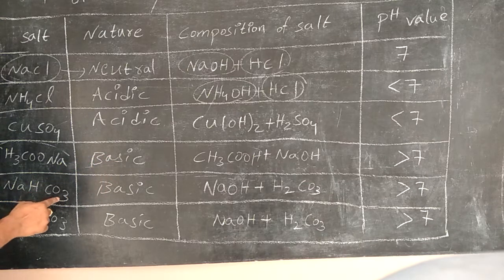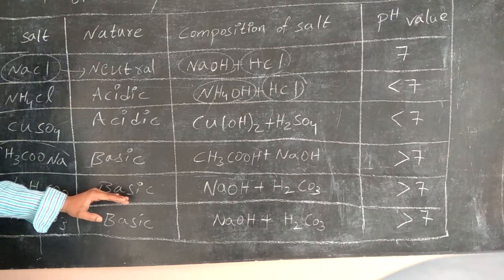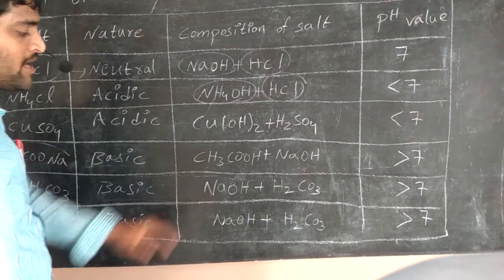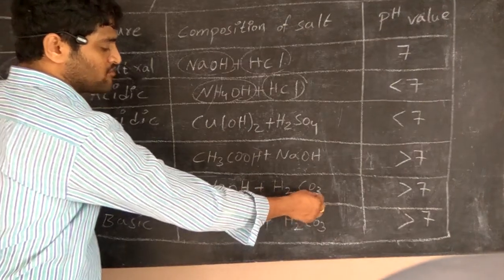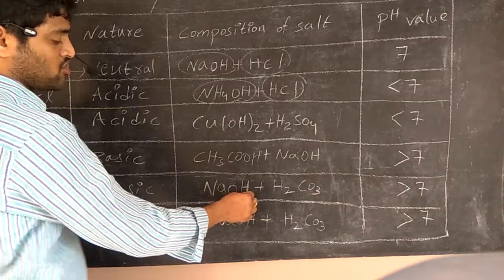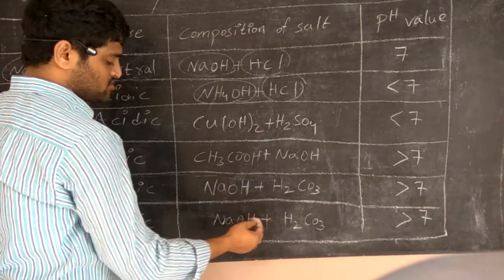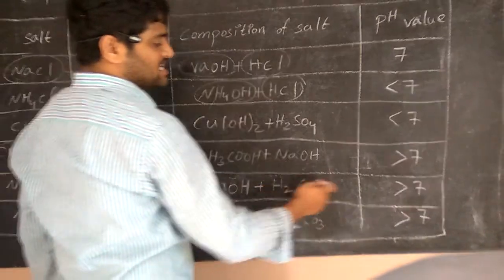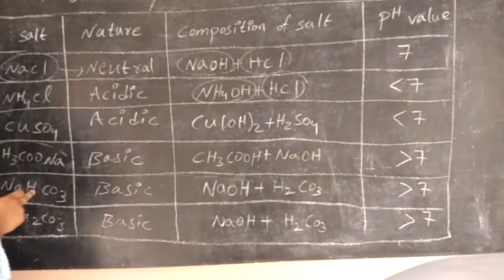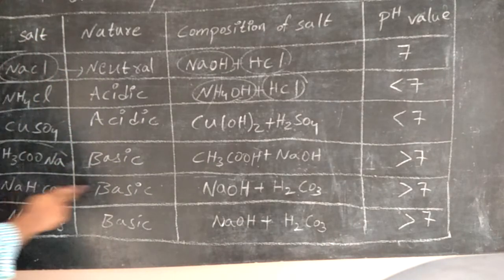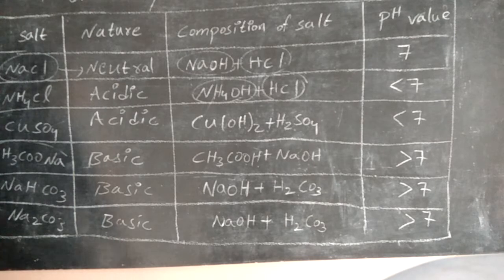The next one is NaHCO3, called sodium hydrogen carbonate or sodium bicarbonate. This is a basic salt. Why? Because it is formed by the combination of a strong base NaOH and a weak acid H2CO3. The resultant pH value is greater than 7, that's why sodium bicarbonate is called a basic salt — it has basic nature.